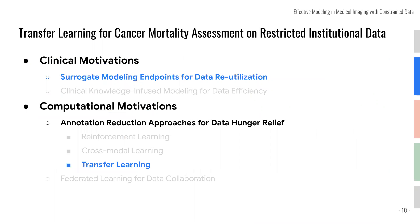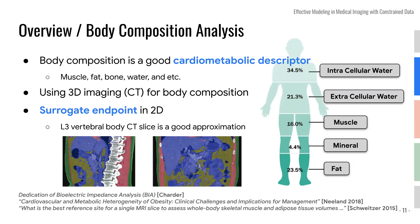The first task we're looking at is transfer learning for cancer mortality assessment. In this work, we're going to look at a concept called short-axis body composition implants, and use transfer learning to assess the mortality risk factor for cancer. We're going to use the concept of body composition — you know, you step on a machine holding your hands on a metal rod and run current through your body to get measurements of how much fat, how much water, how much muscle is in your body.